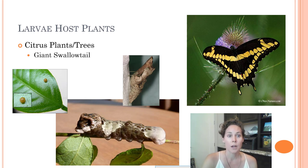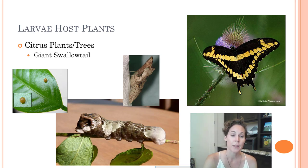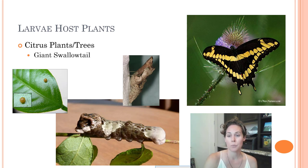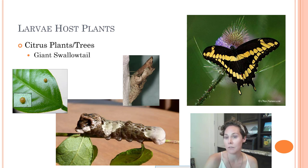The giant swallowtail prefers citrus — they lay their eggs on citrus plants. Their larva looks like bird droppings so that predators won't go near it. They're a very large, pretty butterfly — mainly black with yellow on the top side of the wings, and mainly yellow with black on the underside, so it's pretty much reversed. The adults feed on whatever nectar plant they want, but they lay their eggs on citrus.